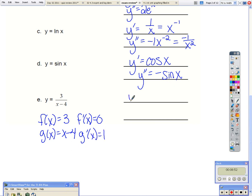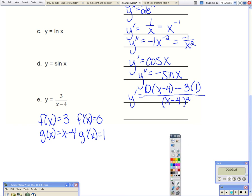So y prime is the derivative of the top times the bottom, minus the top times the derivative of the bottom, all over the bottom squared. So simplifying this, I'm left with negative 3 over (x minus 4) squared.